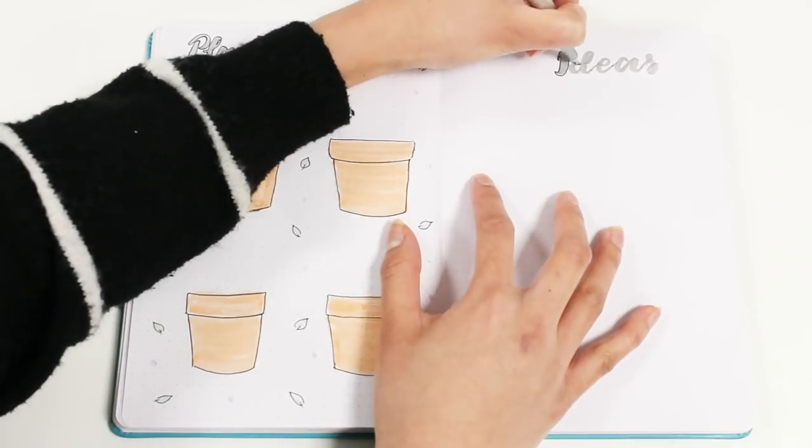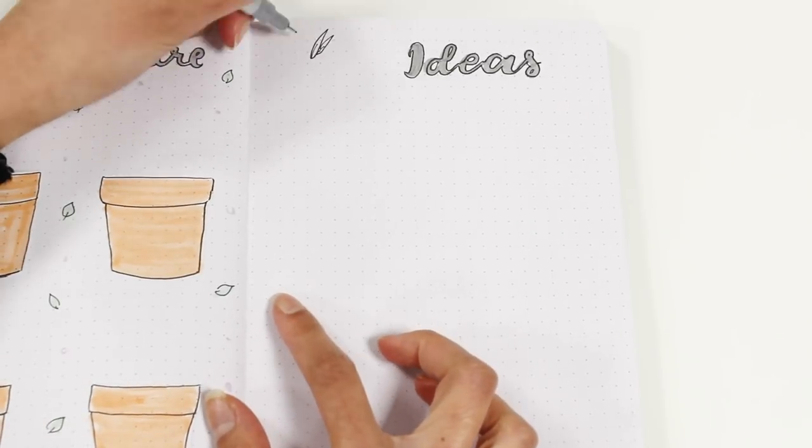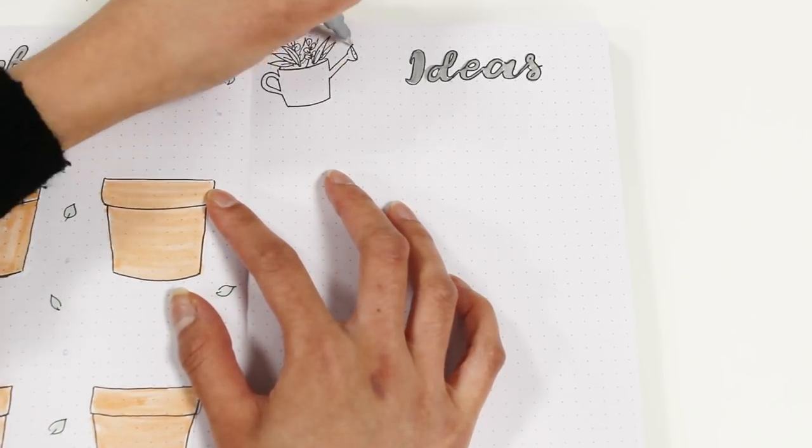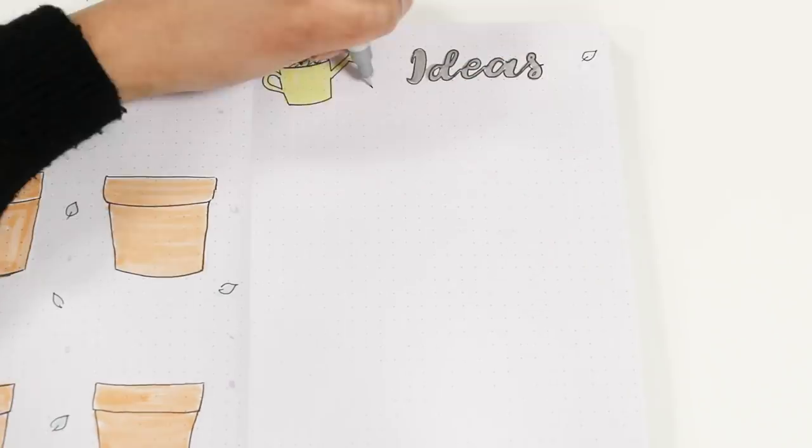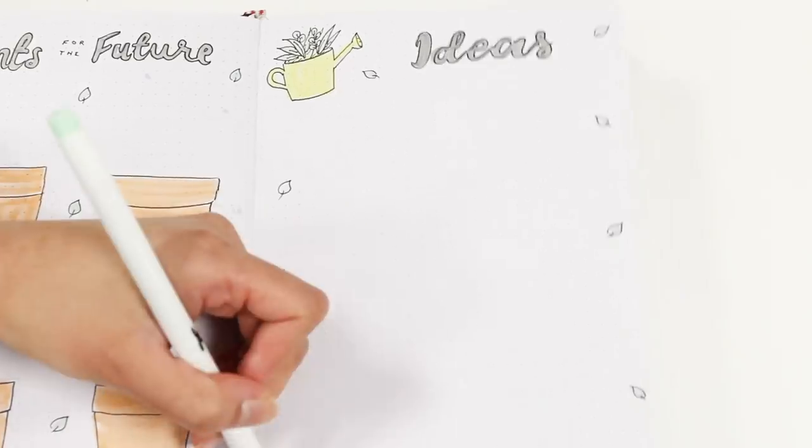Next I have my ideas page, which is basically just a brain dump page. This is just nice and simple—I'm just writing the title and then adding a simple drawing of a watering can with plants and then a leaf border to frame the page.